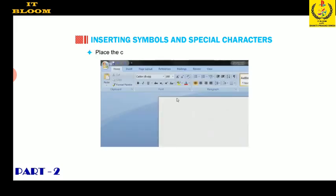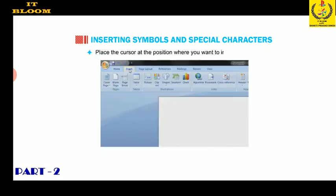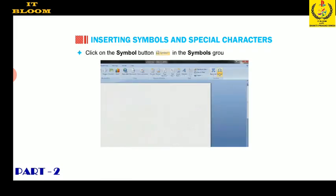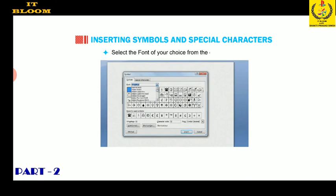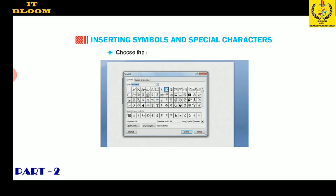Place the cursor at the position where you want to insert a symbol. Click on the symbol button in the symbols group on the Insert tab and select 'More Symbols.' The symbol dialog box appears. Select the symbols tab if it is not already selected, choose the font of your choice from the drop-down list, choose the symbol, click the Insert button, and then click Close.